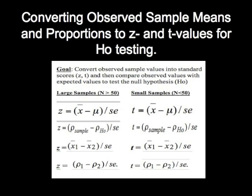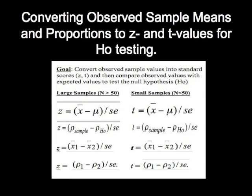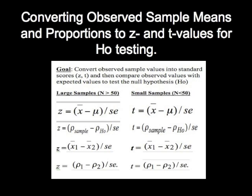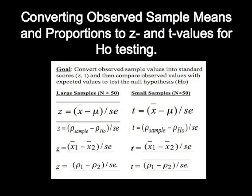Notice in each of these cases, the goal is to try to convert your observed sample values, your means or proportions, into z-scores by subtracting your observed sample values from the expected values.